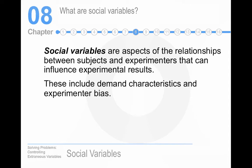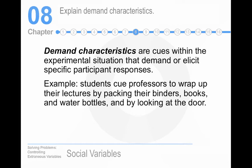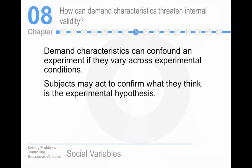Social variables are the relationships between participants and experimenters — specifically demand characteristics and experimenter bias. Demand characteristics are cues within the experimental situation. People will do things for science they wouldn't normally do, and what participants usually try to do is fulfill the expectations of the researcher. This is what we call a good participant — they figure out what the study is about and then do that. Demand characteristics can confound an experiment because people fulfill what they think the experimental hypothesis is.